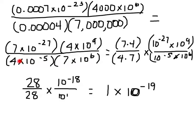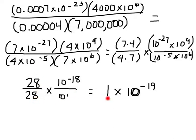Now I'm going to say 7 times 4 on the top, which is 28, and 4 times 7 on the bottom, which is 28. And then I've got 10 to the negative 27th times 10 to the 9th — we're multiplying, so I add those two and get 10 to the negative 18. And here I'm going to add negative 5 and positive 6, which gives me 10 to the 1st.